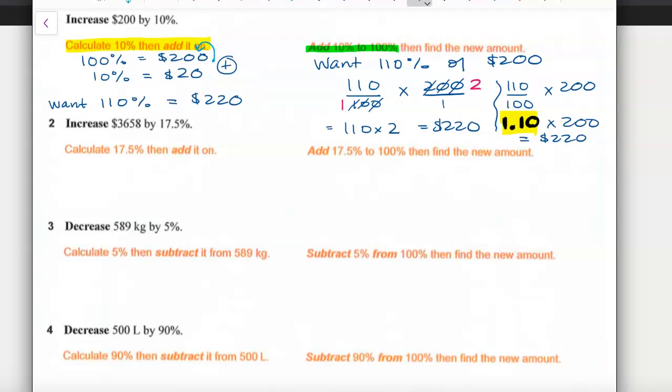Let's see this in action again with some not so nice values. Let's have a calculator handy. I'm going to increase 3,658 by 17.5%. I'm going to calculate 17.5% and add it on. Well 100% of my value is 3,658, so 17.5% - this is 17.5 over 100 lots of 3,658. I'm going to grab my calculator: 17.5 divided by 100 lots of 3,658 gives me $640.15. So now I'm going to add them together, that's going to give me $4,298.15.